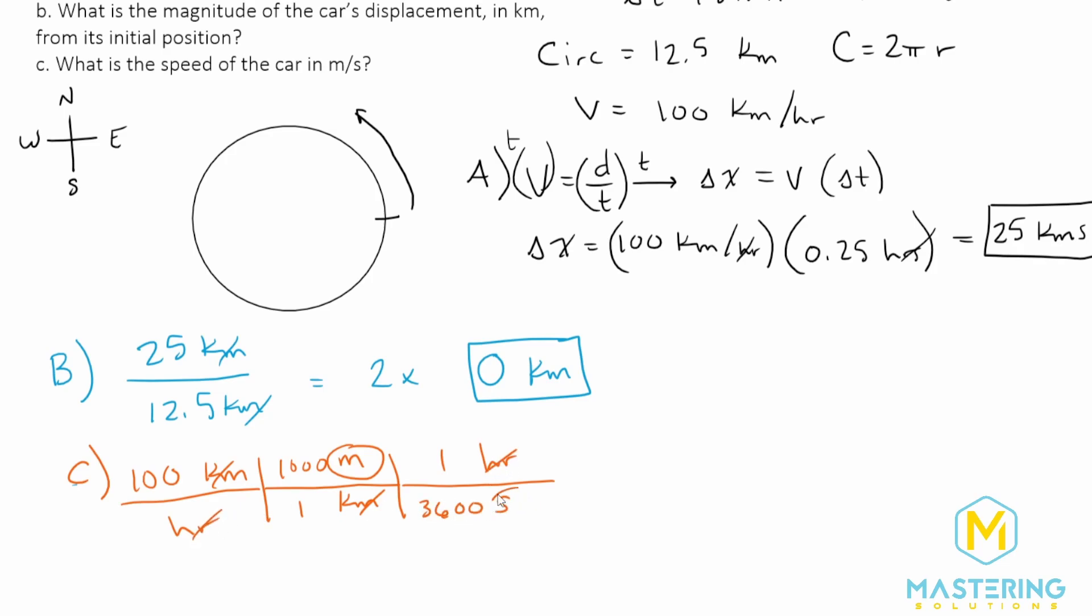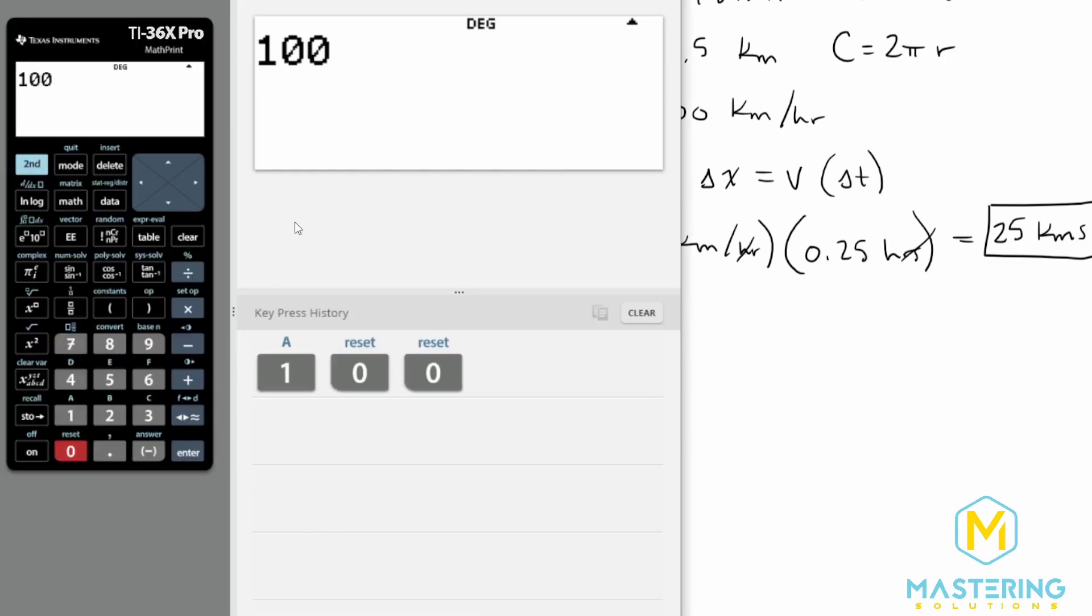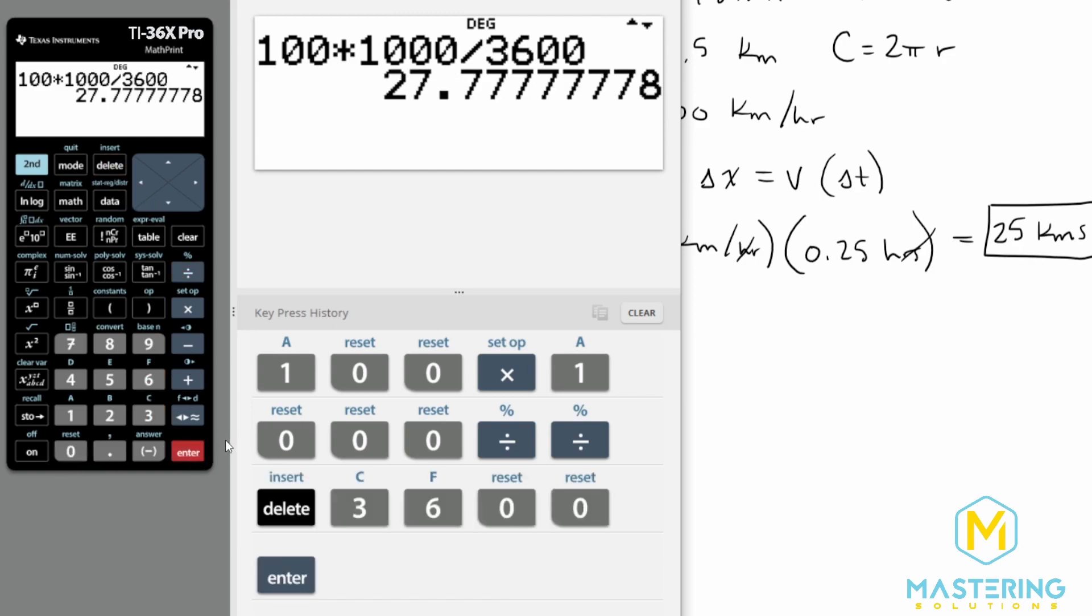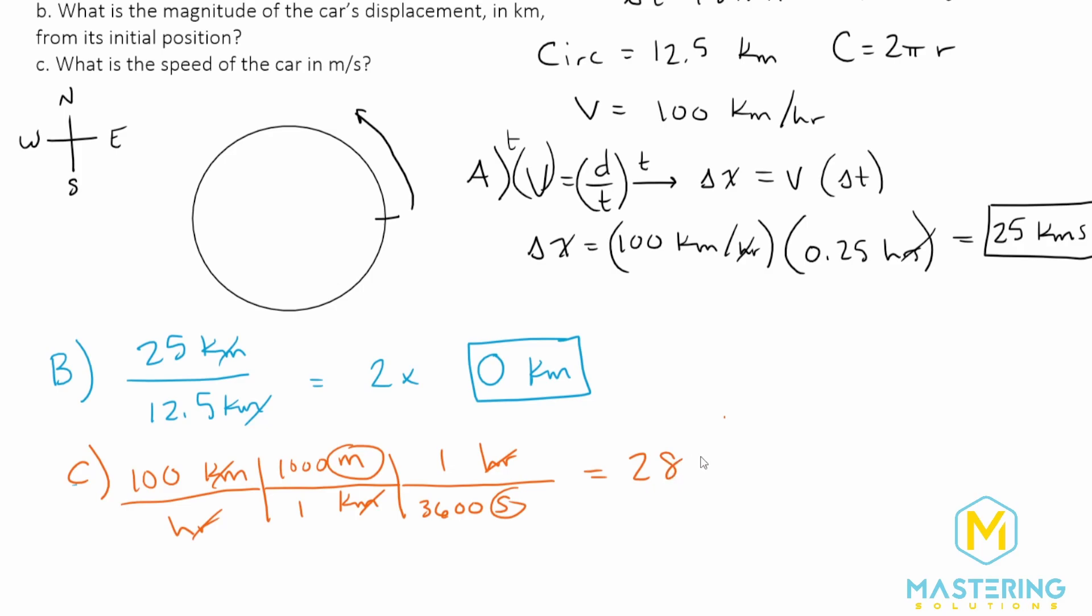So now the hours are canceled and we're left with meters on the top, seconds on the bottom, which is the units that we need. So now we can plug this into our calculator. We have 100 kilometers multiplied by a thousand to put us into meters, and then divide that by 3,600 to put us into meters per second. And we have a speed of 27.78. So we'll round that up to 28 meters per second, which is the speed of the car.